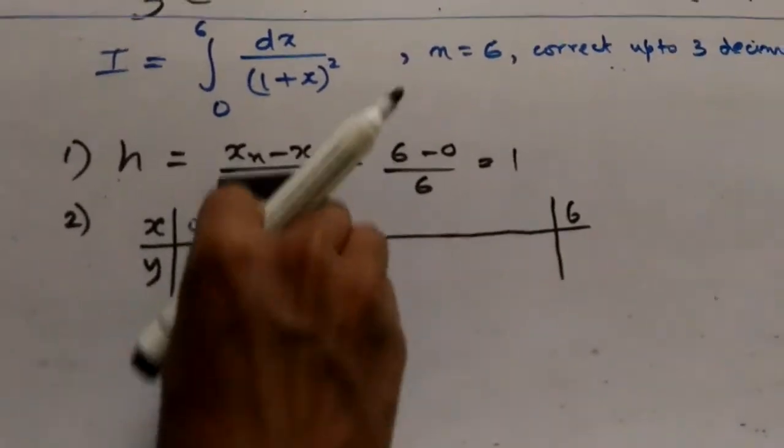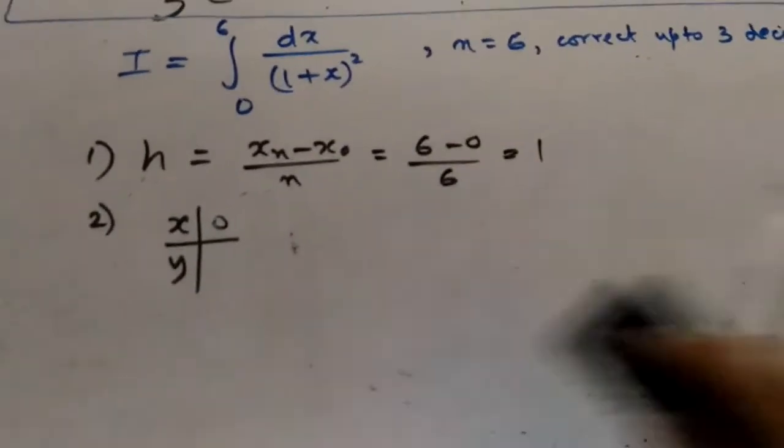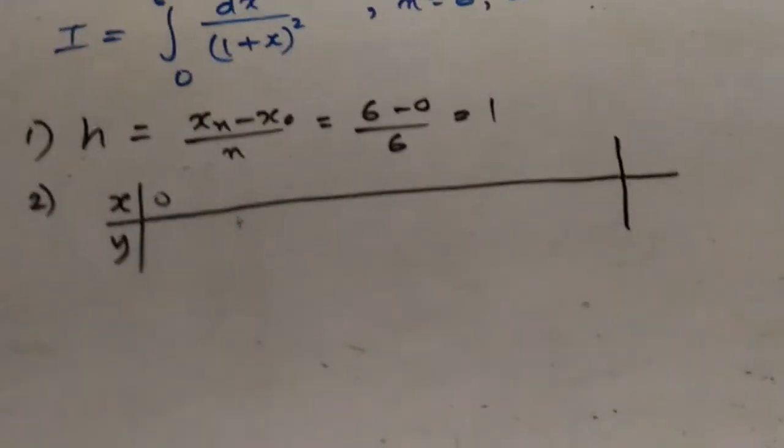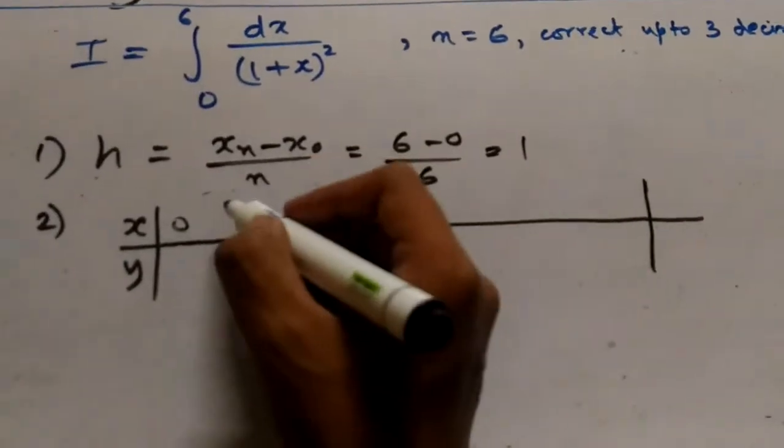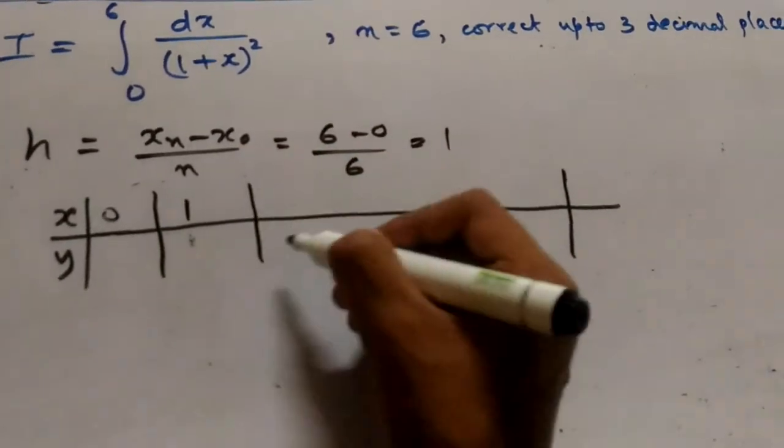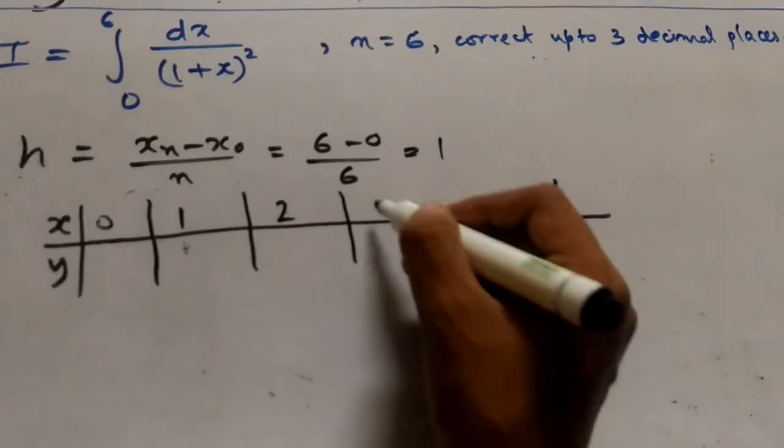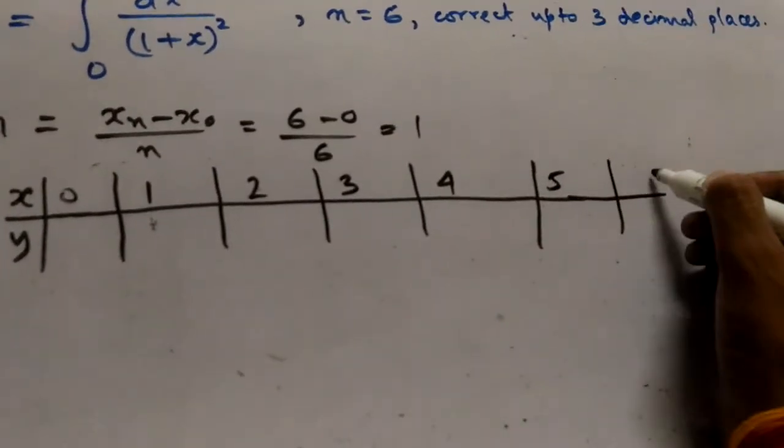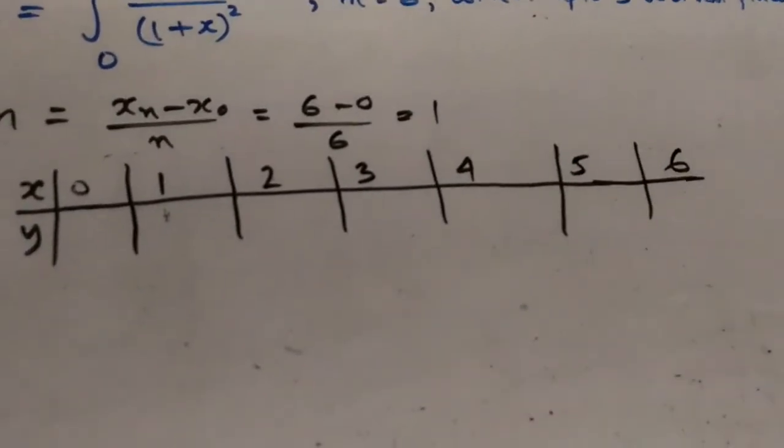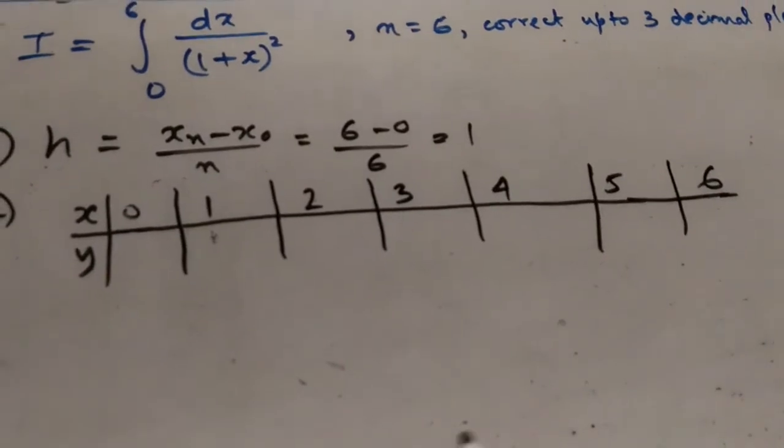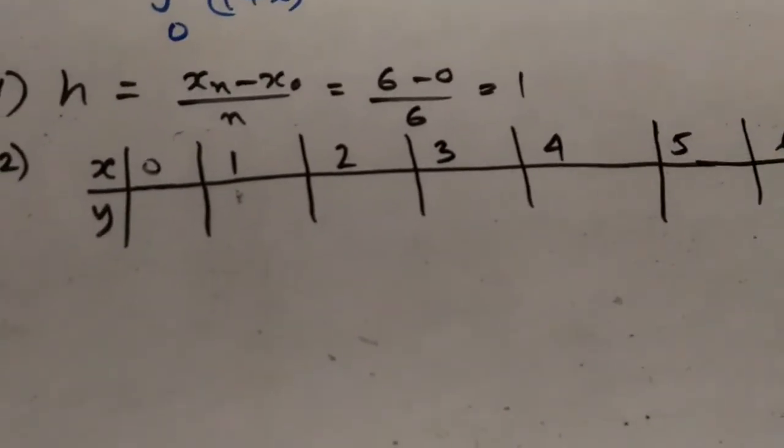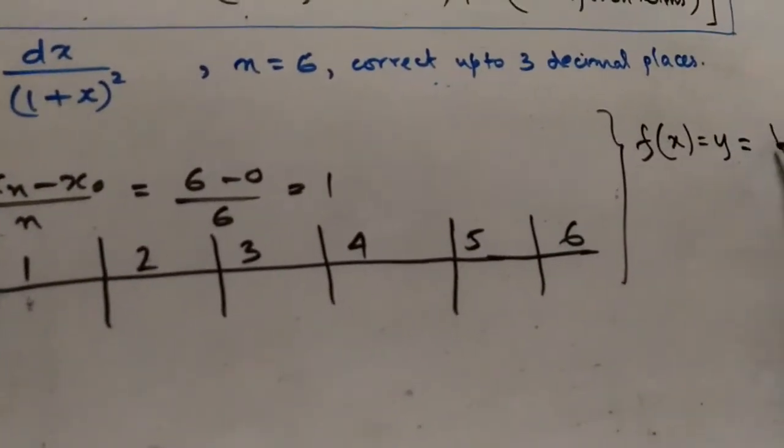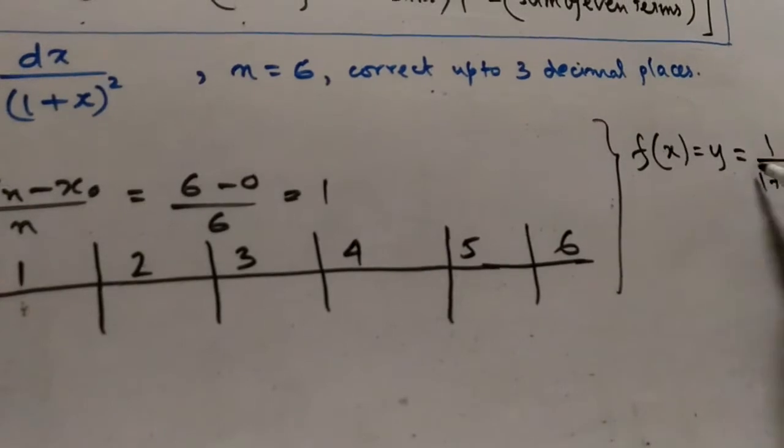Let us construct a bit wider, and the last term is 6. Now for x equals to 0, first of all we have to write what is our f(x) or y. Now here f(x) or y is 1/(1+x)².